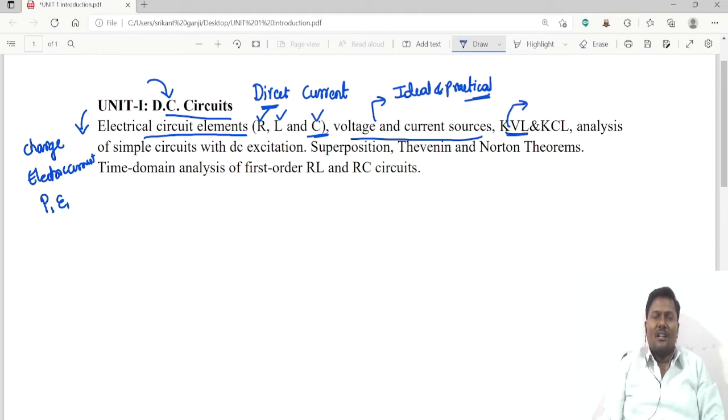After that, Kirchoff's voltage law KVL. Kirchoff's voltage law means the algebraic sum of voltage in a closed loop is equal to zero. And KCL means Kirchoff's current law.